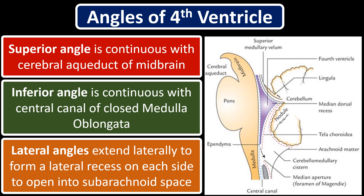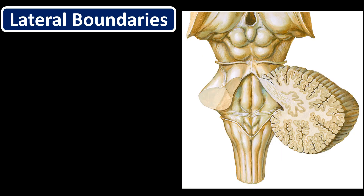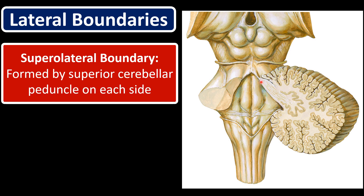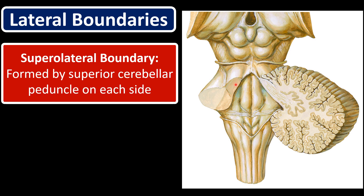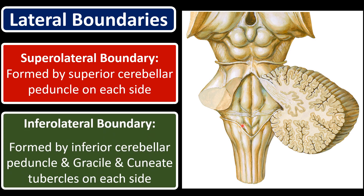The superolateral boundary is formed by the superior cerebellar peduncle on each side. The inferolateral boundary is formed by the inferior cerebellar peduncle, and the gracile tubercle and cuneate tubercles on each side.